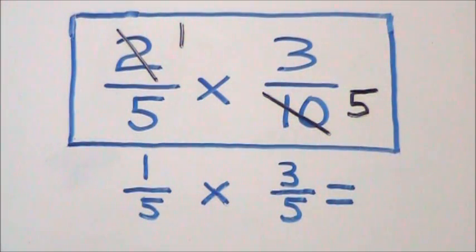So now we've essentially created a problem with simplified fractions and all we have to do now is multiply across.